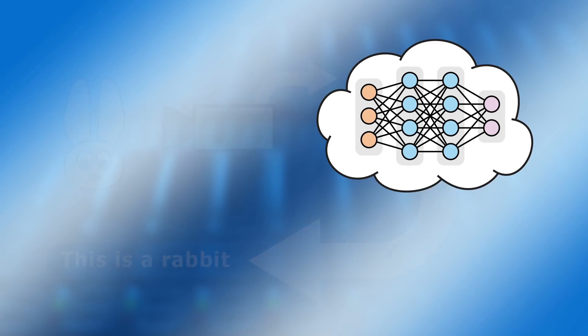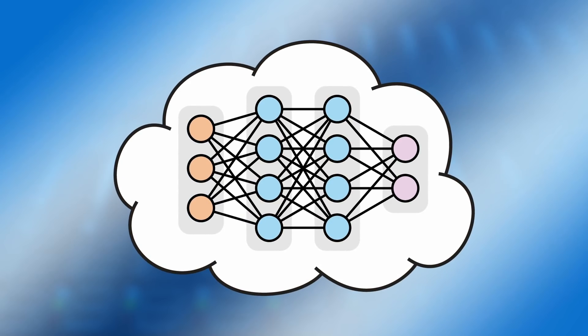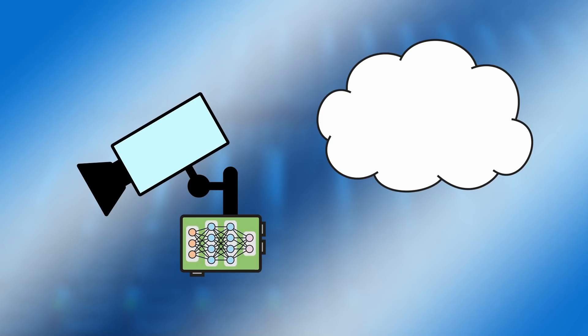Alternatively, in an edge computing scenario, a neural network is usually still trained on a data center server, as training requires a lot of computational power. For example, a neural network for use in a factory may be shown images of correctly produced and then defective products so that it can learn to distinguish between the two. But once training is complete, a copy of the neural network is deployed to a networked camera connected to edge computing hardware. This allows it to identify defective products without transmitting any video over the network. Latency is therefore improved and the demands on the network are decreased, as data only has to be reported back when defective products are identified.